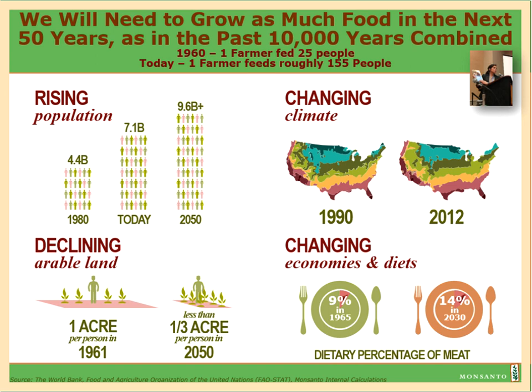We also have a changing climate. Potentially areas that didn't have a lot of pest pressure because they had harsh winters to kill off insects may be getting warmer now. So farmers go to grow their crops and now have pest pressure they didn't have to manage before. We also see the decline in arable land and changing economies and diets — as people gain access to more income, they have an increased demand for meat, and obviously those animals need to be fed with grain.